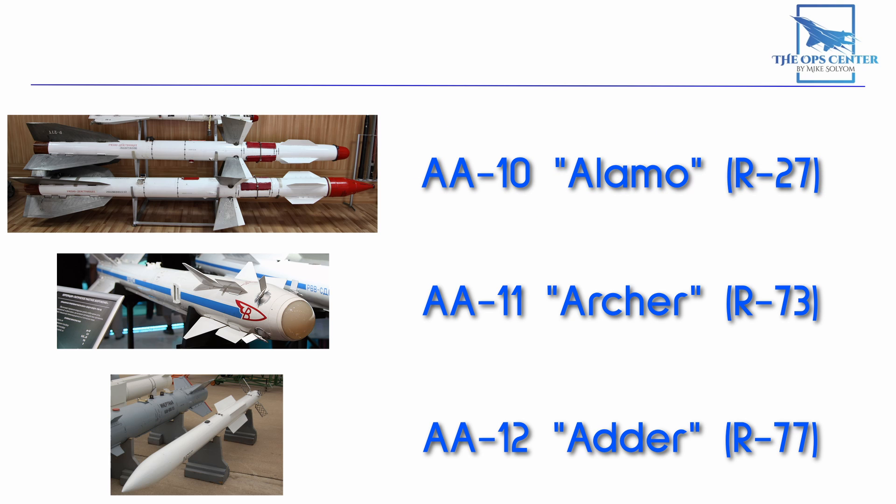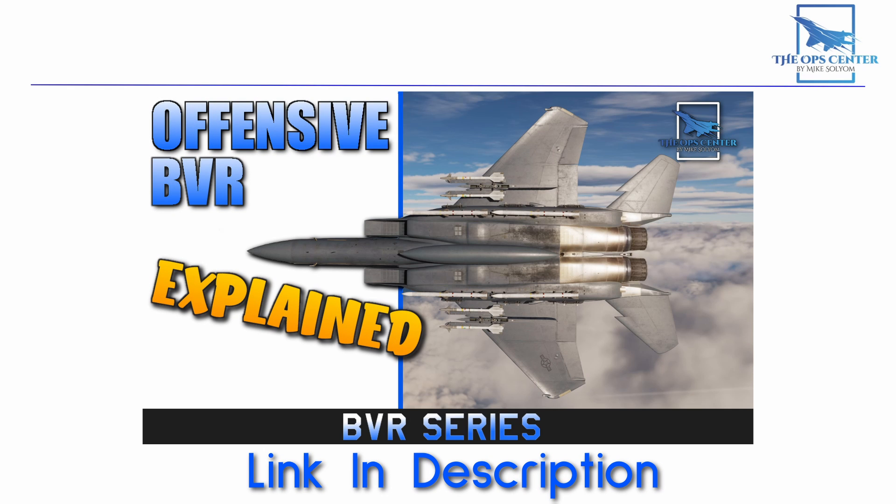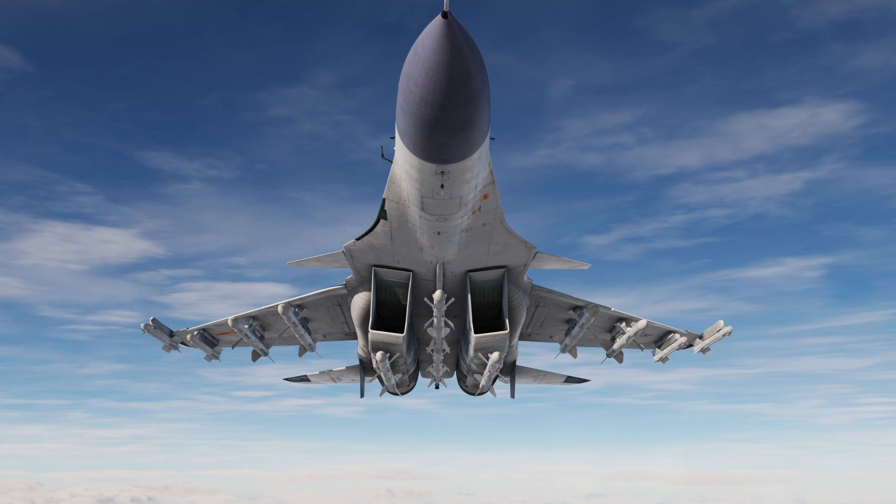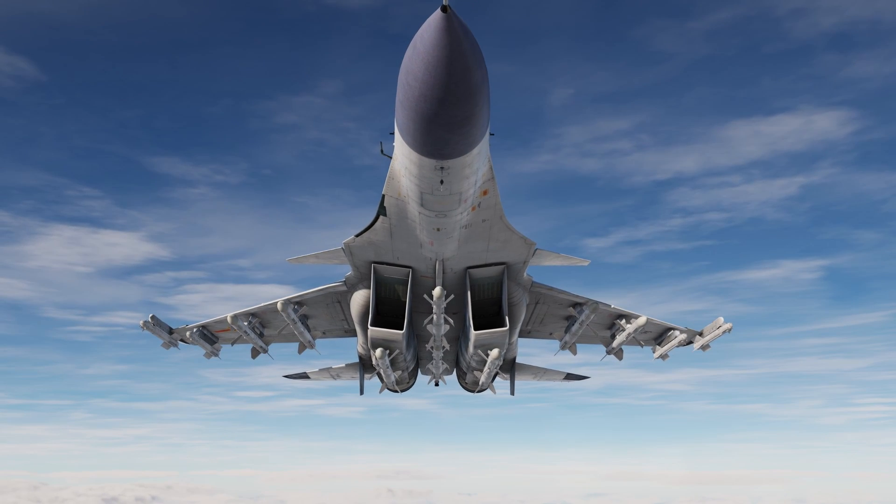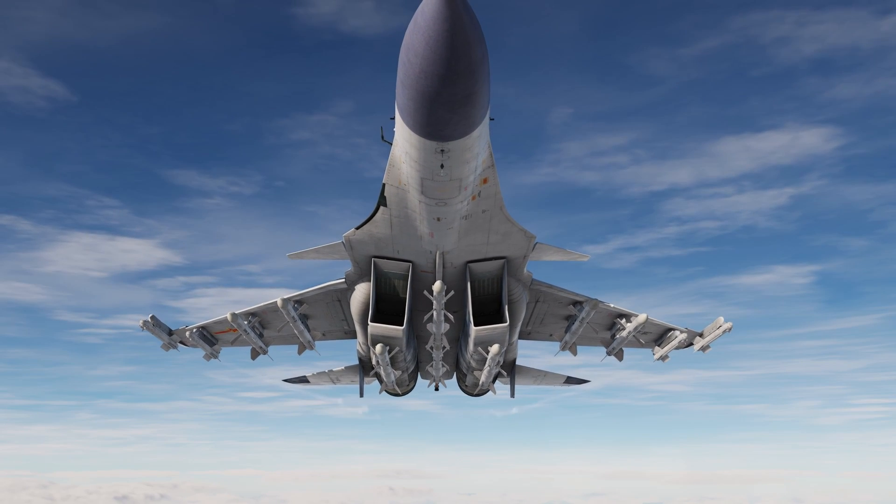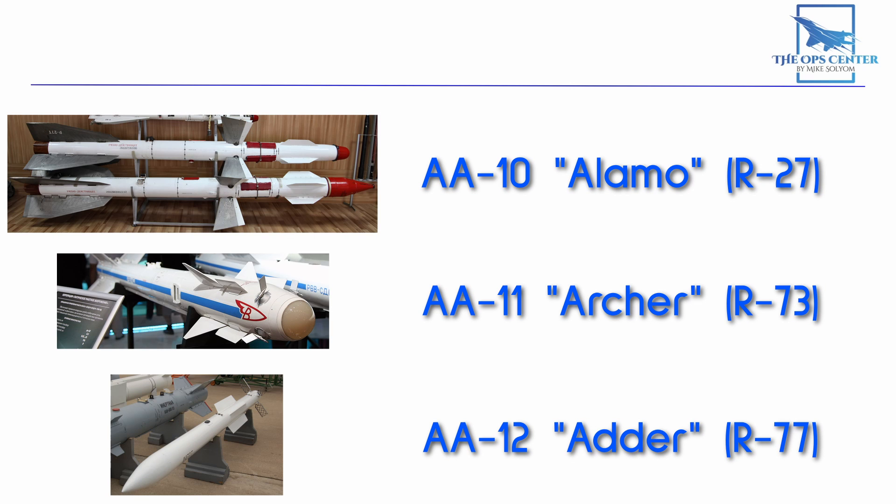In case you're wondering, the reason for these various seekers is to increase probability of kill. In this video, we talked about how the PK covers a wide variety of parameters. Firing the same missile twice under the exact same parameters doesn't really increase PK. If one missile under those conditions would miss, then so would two. So the Soviet solution to the problem was to build that variety of parameters right into the missiles themselves. That way, two AA-10s with different seekers could be fired back-to-back with an increase in PK.